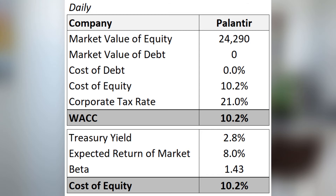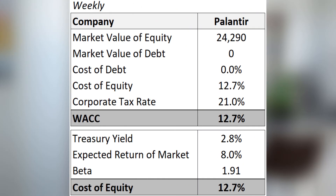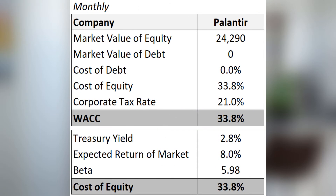So now let's hop into the file and see what WACCs we've calculated. The daily WACC comes out to 10.2% with a beta of 1.43. The weekly WACC came out to 12.7% with a beta of 1.9, and the monthly WACC came out to 33.8% with a beta of 5.98.